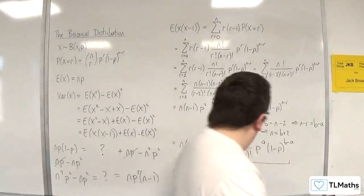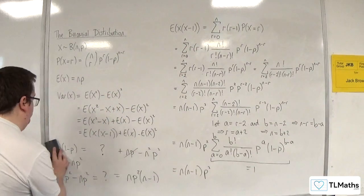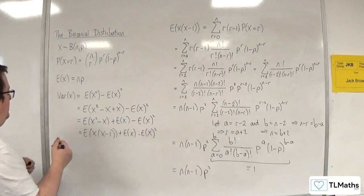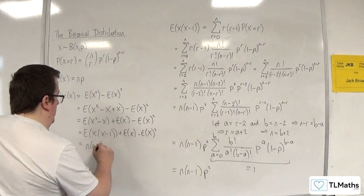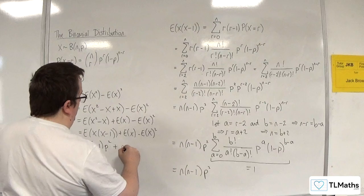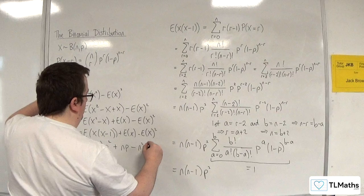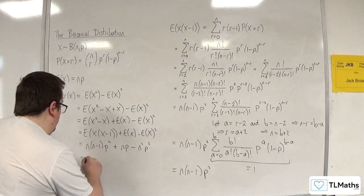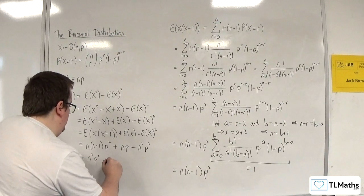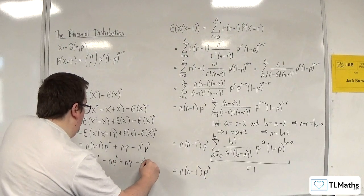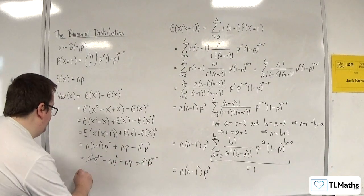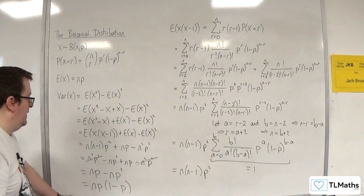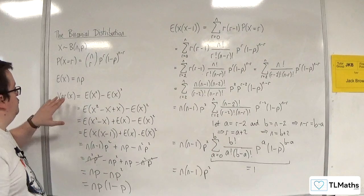Excellent. So I've now shown that E(x(x−1)) = n(n−1)p². Therefore, Var(x) = n(n−1)p² + np − n²p². Expanding: n²p² − np² + np − n²p². The n²p² terms cancel, leaving np − np². Factoring out n and p gives np(1−p), which is the required formula for Var(x).